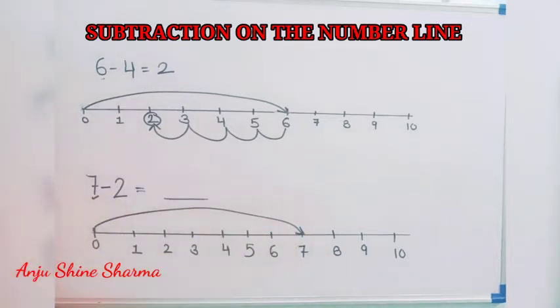So we move back two steps from 7 like this. First step and this is second step. And at last we reach at 5. So our answer is 5, means 7 minus 2 is equal to 5.